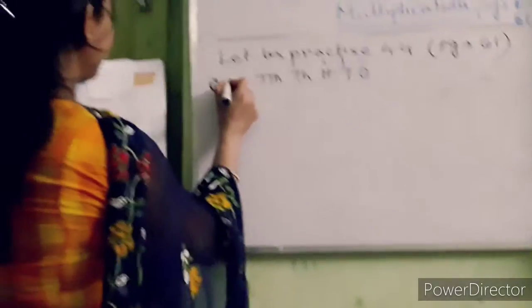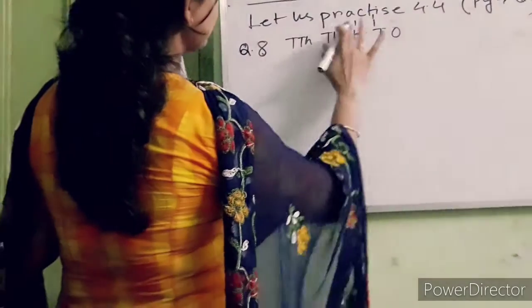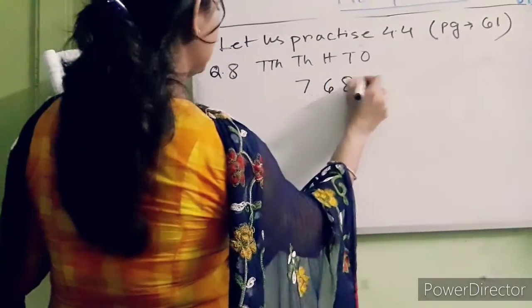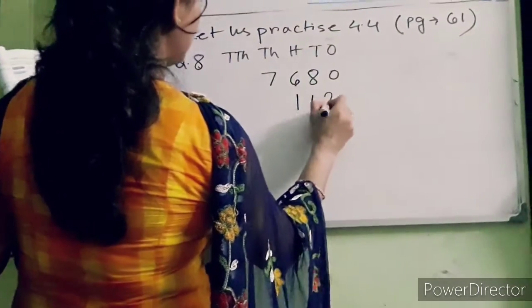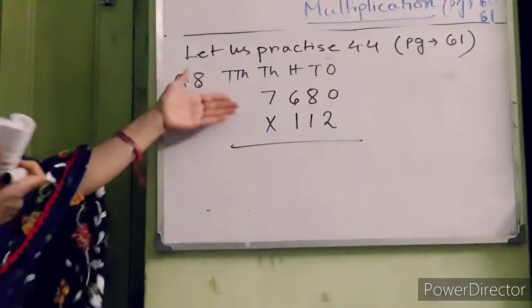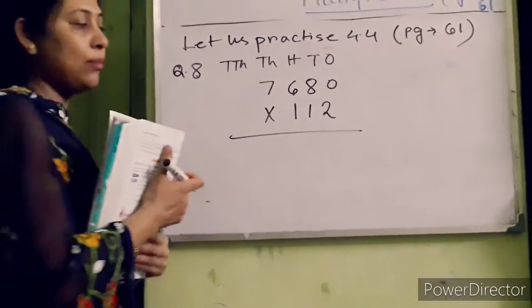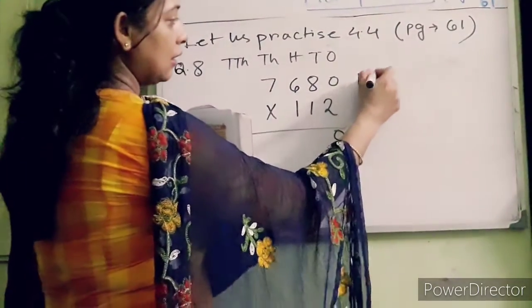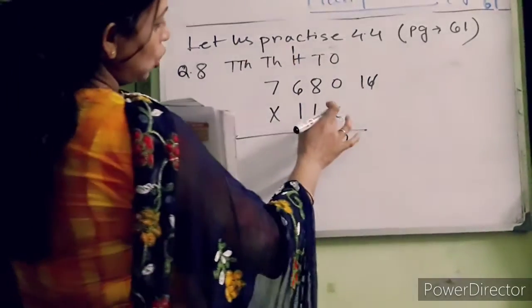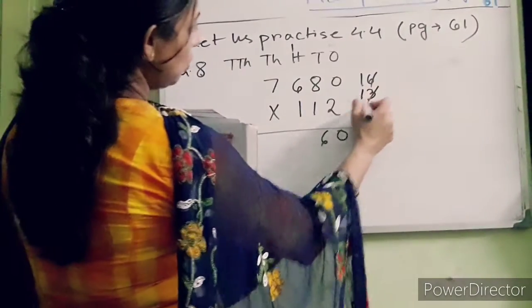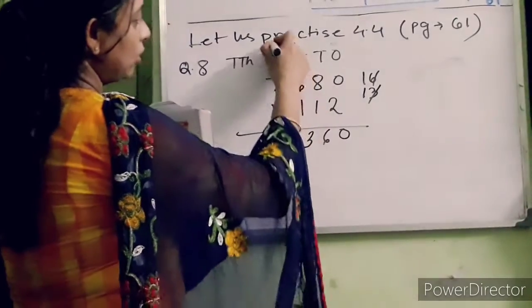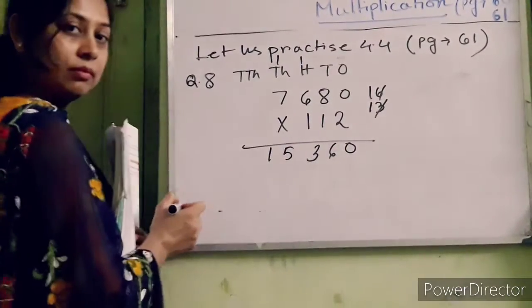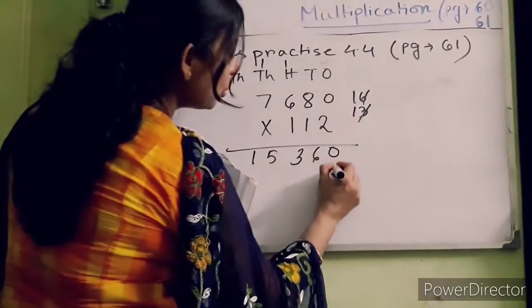Question number 8: seven thousand six hundred eighty, multiply with 112. Same process. First you have to multiply with two. Two into zero is zero. Two into eight is sixteen — cut six and write here, one on the hundreds place. Two into six is twelve, twelve plus one is thirteen — cut three and write here, one on the ten-thousands place. Two into seven is fourteen, fourteen plus one is fifteen. After that put zero on the ones place.